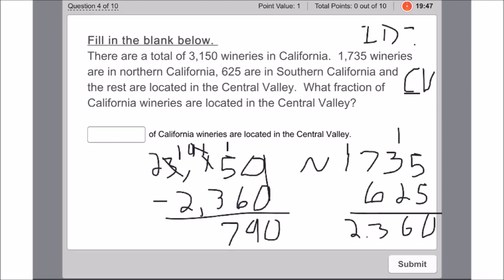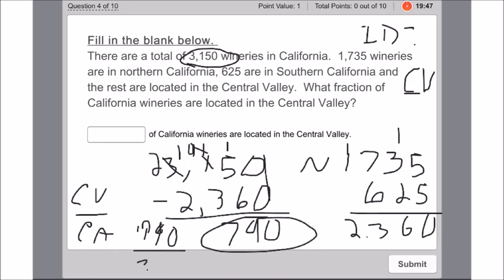Now the fraction asks what fraction of California wineries are located in the Central Valley, so you're going to put Central Valley on top and California as a whole on the bottom. Now you have that number, Central Valley, and that number for total California, so now you simply make a fraction, 790 over 3,150.